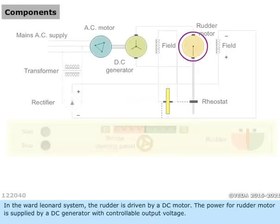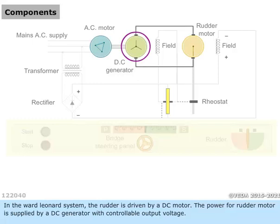In the Ward-Leonard system, the rudder is driven by a DC motor. The powerful rudder motor is supplied by a DC generator with controllable output voltage.